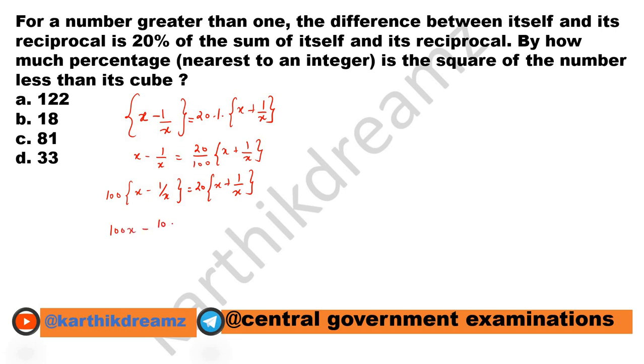100x minus 100 by x equals 20x plus 20 by x. When we interchange all those things, 100x minus 20x equals 100 by x plus 20 by x. So this becomes 80x. This equals 120 by x.